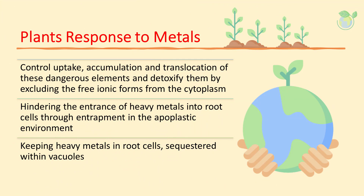Plants resort to a series of defense mechanisms that control uptake, accumulation, and translocation of these dangerous elements, and detoxify them by excluding the free ionic forms from the cytoplasm, hindering the entrance of heavy metals into root cells through entrapment in the apoplastic environment by binding them to exuded organic acids or to anionic groups of cell walls. Restricting the heavy metals that do enter the plant, they are kept in root cells where they are detoxified by complexation with amino acids, organic acids, or metal-binding peptides, and sequestered into vacuoles, which also restricts translocation to above-ground organs, thus protecting the leaf tissues and particularly the metabolically active photosynthetic cells from heavy metal damage.